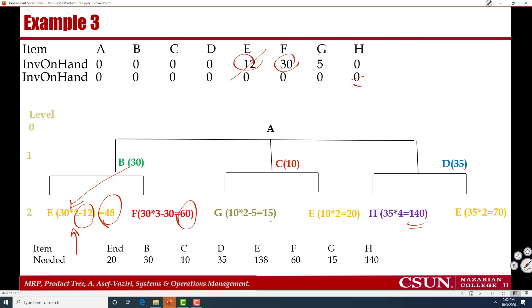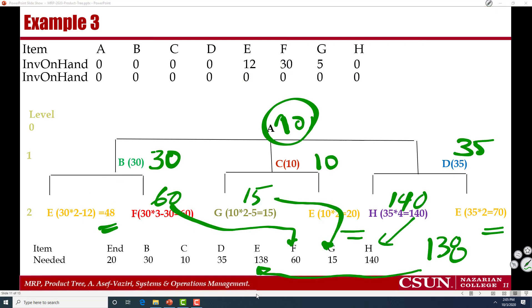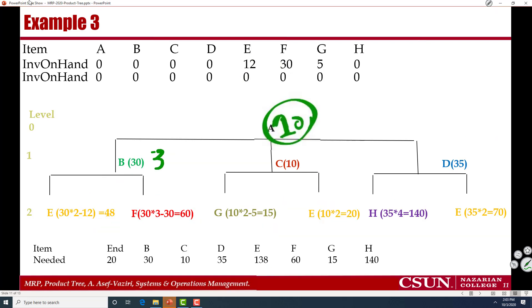But here, we need 35 times 2, which is 70. So A, I need 20. B, I need 30. C, 10. D, 35.